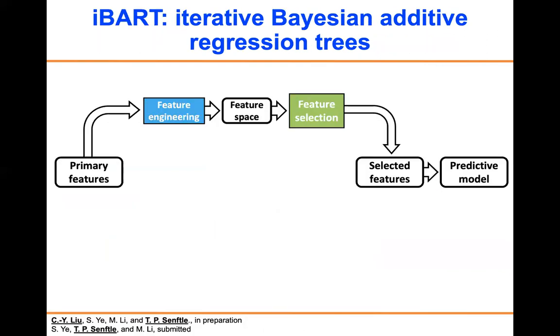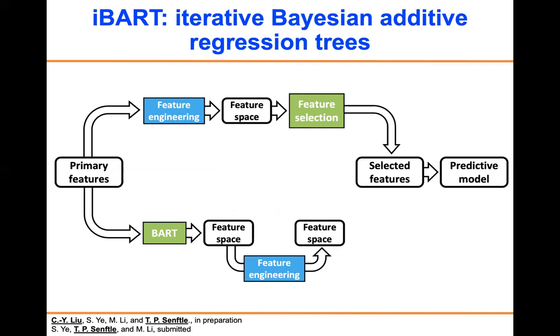So here we propose another workflow to overcome this problem. Instead of doing feature engineering first, we use a feature selection method called Bayesian Additive Regression Trees to screen for meaningful features. Then we do the feature engineering, and followed by that, we do another feature selection with BART, and we can do it over and over again.